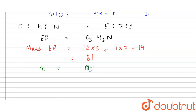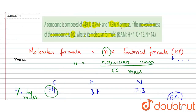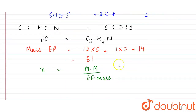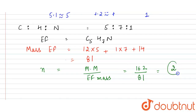Now we calculate n: n = molecular mass / EF mass = 162 / 81 = 2.